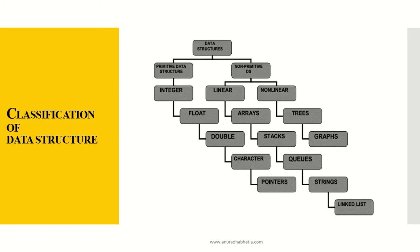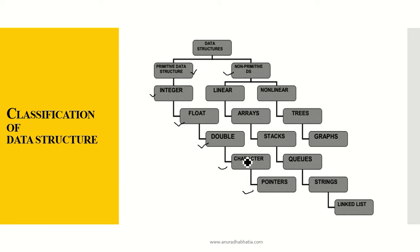Data structures are first classified into primitive data types and non-primitive data structures. Primitive data structures are basically the data types of any programming language: integer, float, double, character, and pointers. To know more about this, you can refer to the Programming in C structured programming approach video, where the character set, operations of data, byte allocation, and how these are allocated are already covered.